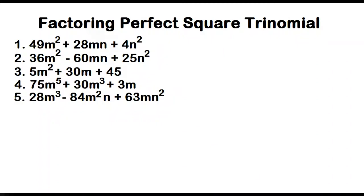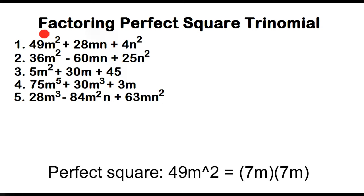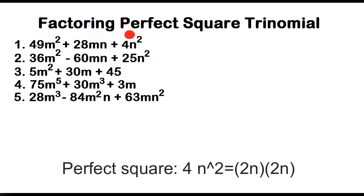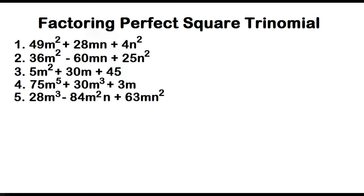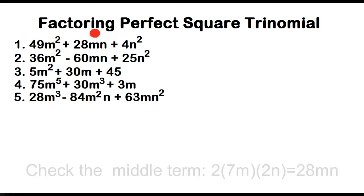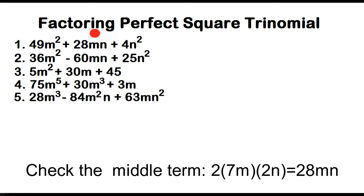Factoring Perfect Square Trinomials. A perfect square trinomial is usually written this way: the first term is a perfect square, and the third term is also a perfect square. To check whether the trinomial is a perfect square trinomial, the middle term is just twice the product of the square root of the first term and the square root of the third term.